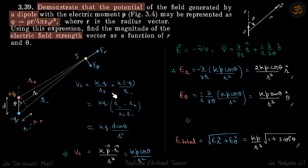We solve this and r₋ minus r₊, which is this distance, we can write as d cos θ. And r₊ times r₋ we can assume it to be r².